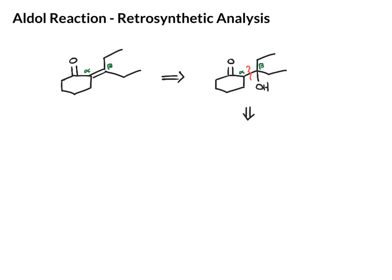And then you can draw your ketone that would have been the nucleophilic species, plus make your alcohol that's on the beta carbon — that would be the carbonyl of the starting material, which would be the electrophilic carbonyl.